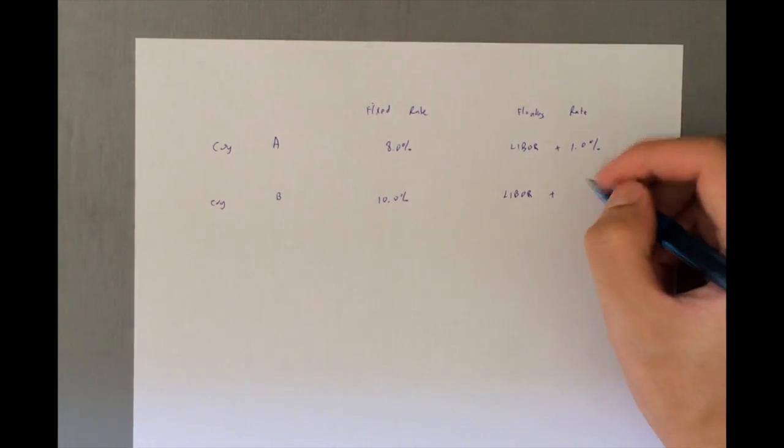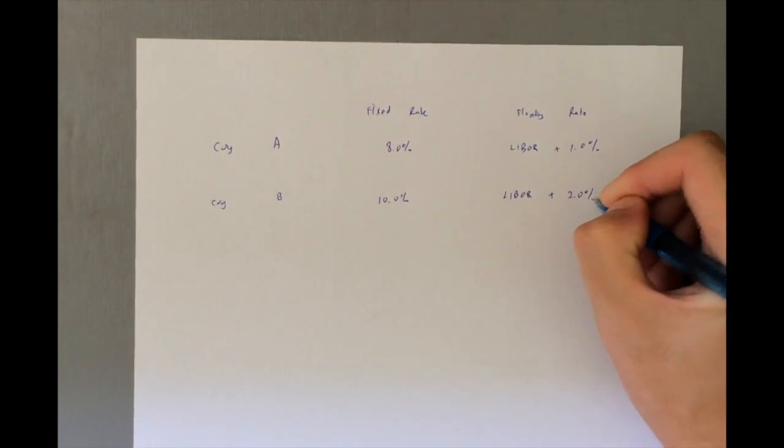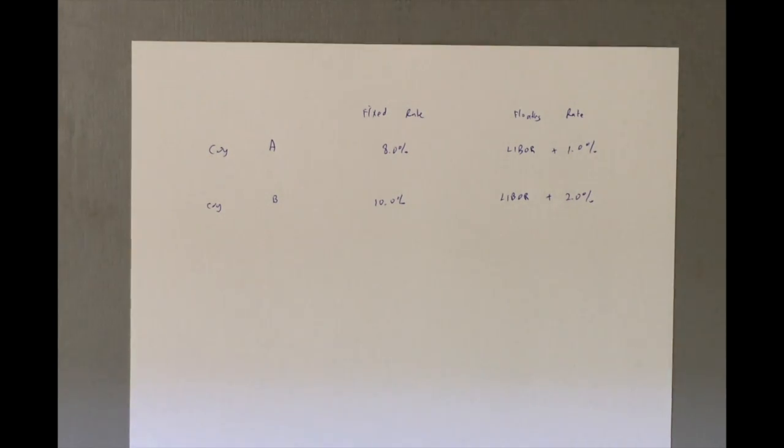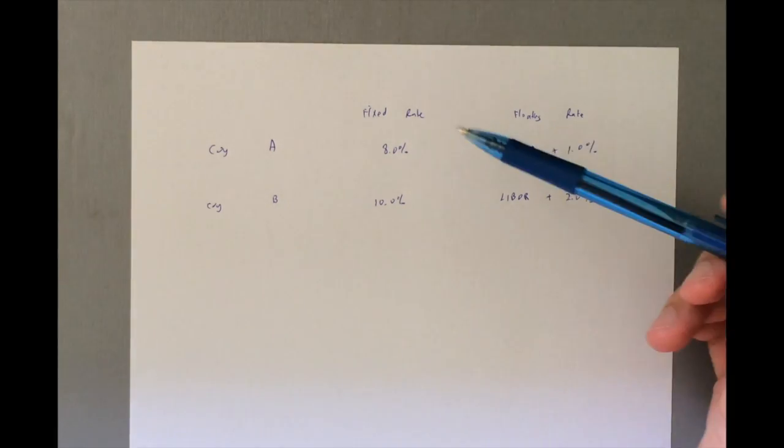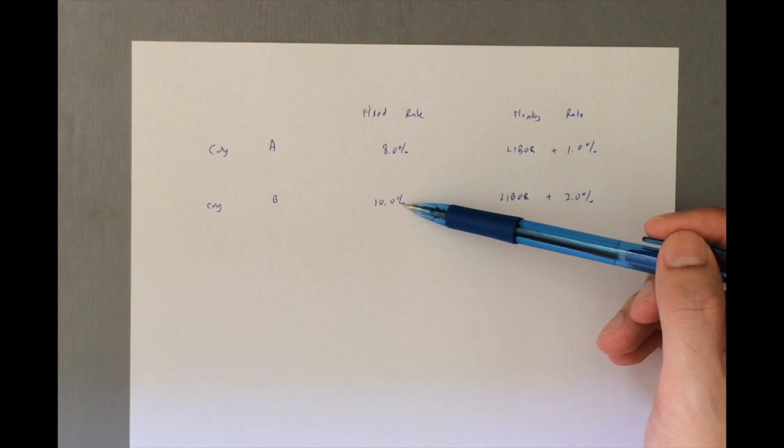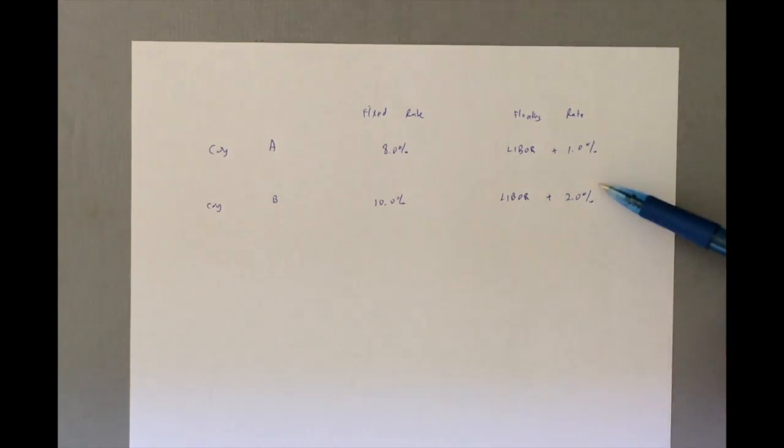As B is a riskier company, it has LIBOR at 2%. Okay, so let's do some simple analysis on it. So for Company A, it's a much better company, so for both fixed rate it is lower and for floating it is also lower interest rate.